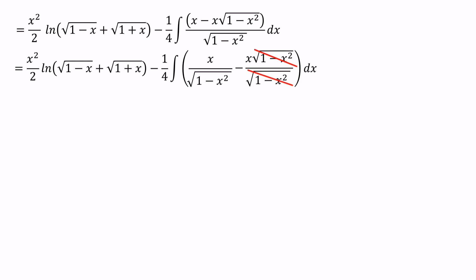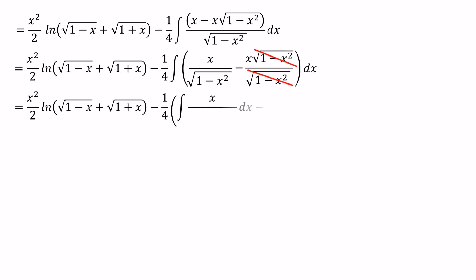After that, we can consider the integral sign separately. The first one is the integral of x over √(1-x²), which we can write as (1-x²) to the power of one half. The second one is simply the integral of x.